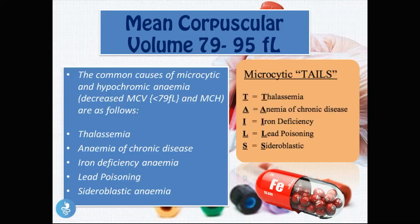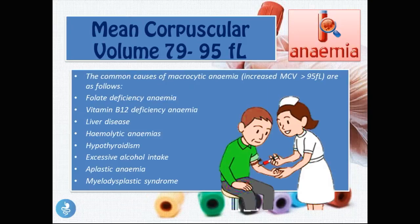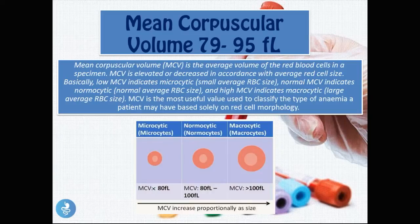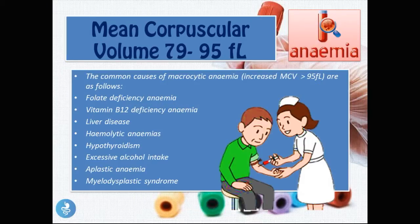For microcytic anemias we can use the mnemonic TAILS: Thalassemia, Anemia of chronic disease, Iron deficiency, Lead poisoning, and Sideroblastic anemia. We can also use the MCV to diagnose macrocytic anemia, which means an increased MCV — a very large red blood cell. Examples of macrocytic anemias include folate deficiency, vitamin B12 deficiency, liver disease, hemolytic anemia, hypothyroidism, excessive alcohol intake, aplastic anemia, and myelodysplastic syndrome.